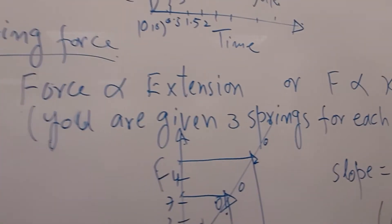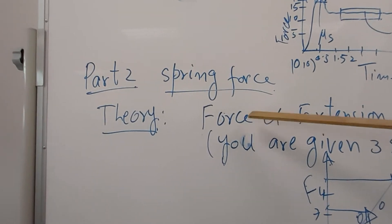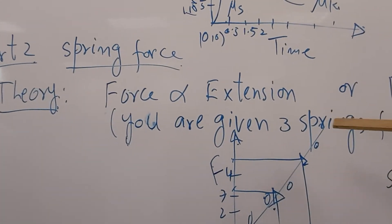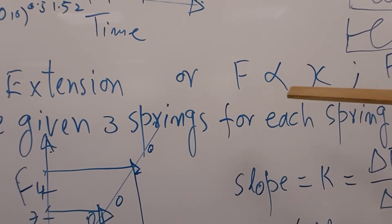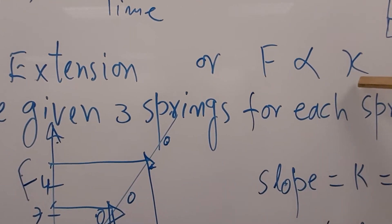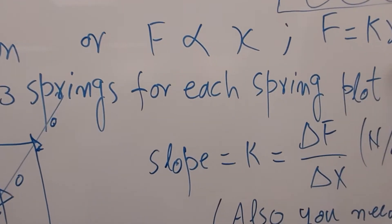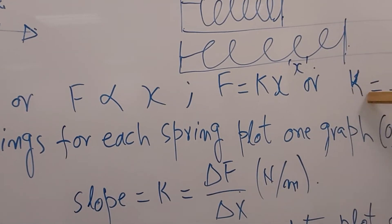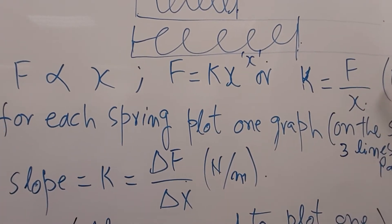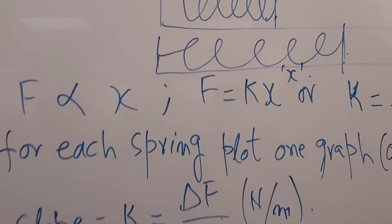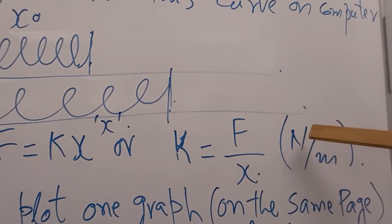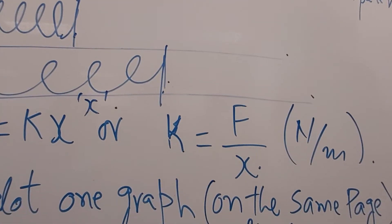What you will do is record that force is directly proportional to the extension. Extension I am recording as x. So F is directly proportional to x. F equals kx, or k the spring constant equals force divided by x. Unit of force is newton, unit of x is meter, so this is newton per meter.